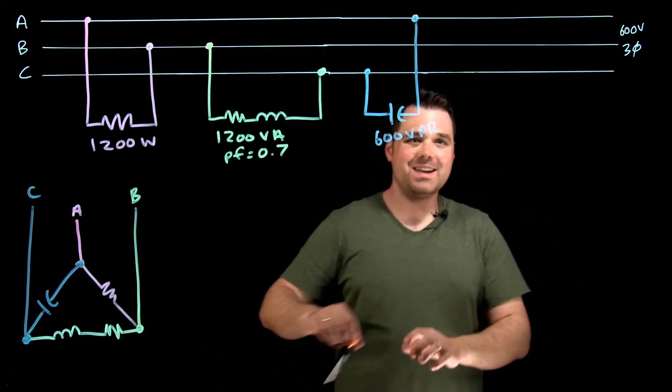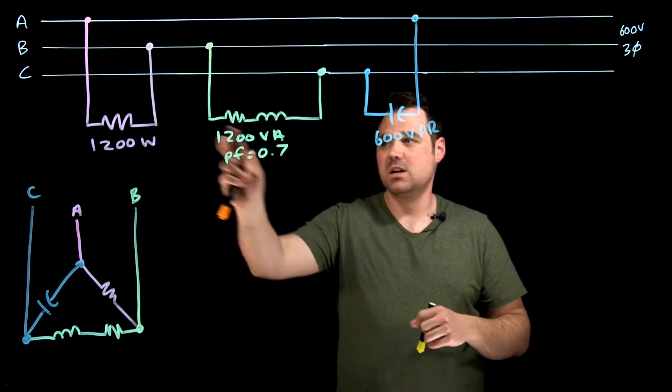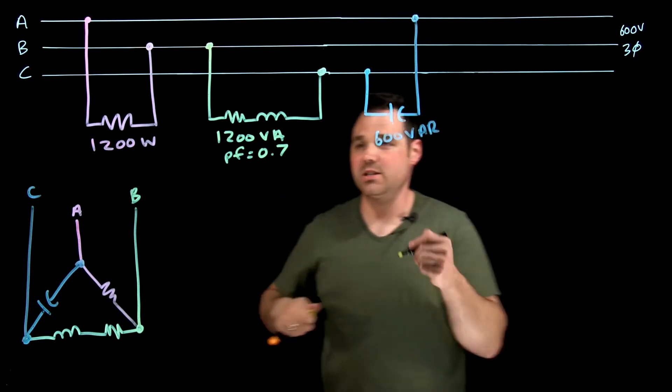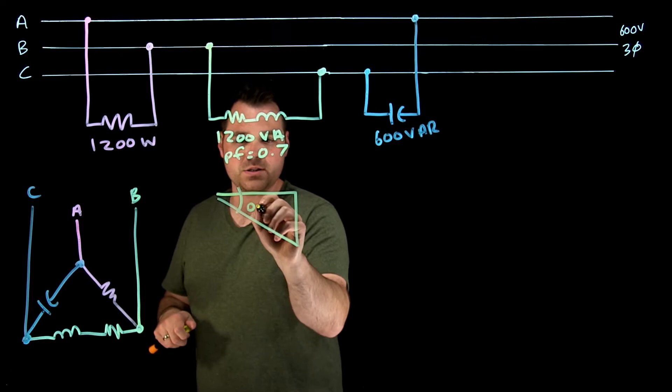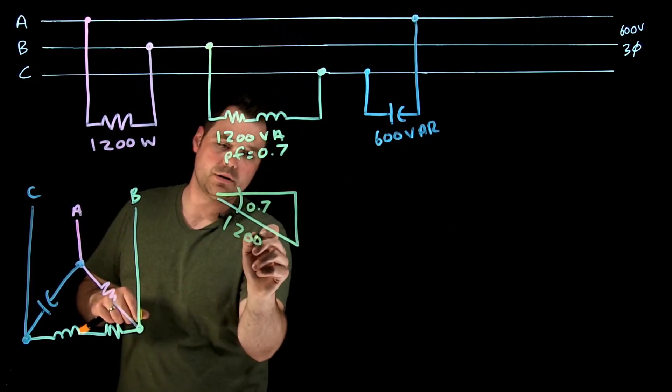But what I want to do here is obviously first thing I'm going to do is break down the B phase. So this is already in watts. I want to find my power triangle essentially for this. So if I've got that, and it's 0.7 is my power factor, and I am 1200 VA.